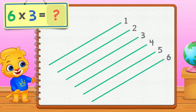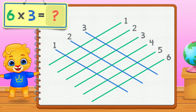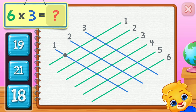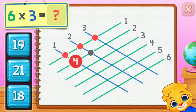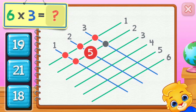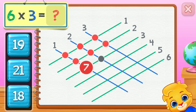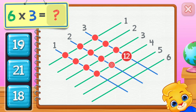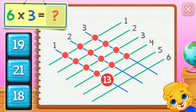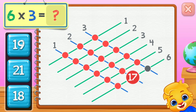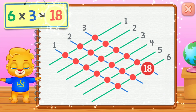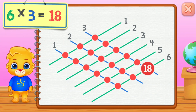Six times three equals... One, two, three, four, five, six, seven, eight, nine, ten, eleven, twelve, thirteen, fourteen, fifteen, sixteen, seventeen, eighteen. Six times three equals eighteen.